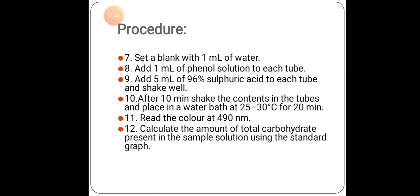Add 1 ml of phenol solution to each tube. Add 5 ml of 96% sulfuric acid to each tube and shake well. After 10 minutes, shake the contents in the tubes and place in a water bath at 25 to 30 degrees Celsius for about 20 minutes. Read the color at 490 nm.